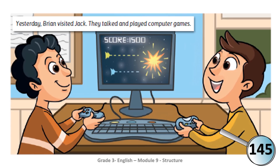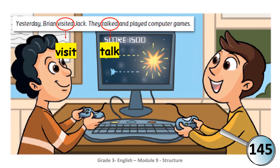The first verb is 'visited' — the base form is 'visit.' The second verb is 'talked' — the base form is 'talk,' it's a regular verb. The third verb is 'played' — the base form is 'play.' Did you notice the key word in the sentence? It is 'yesterday.'